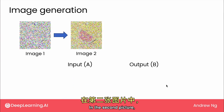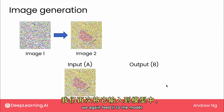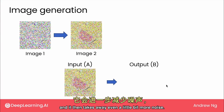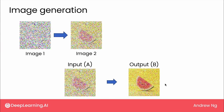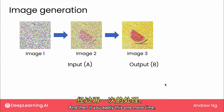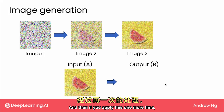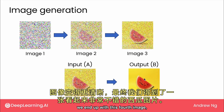Given the second picture, we again feed it to the model, and it takes away even a little bit more noise. And now it looks like we can see a noisy picture of a watermelon. Then if you apply this one more time, we end up with a fourth image which looks like a pretty nice picture of a watermelon.